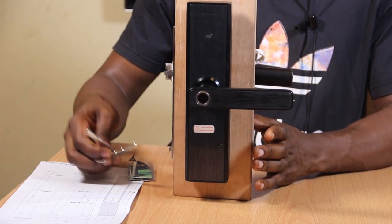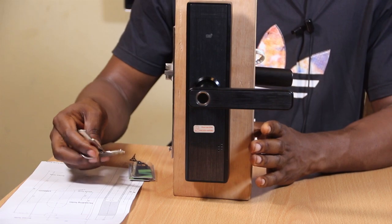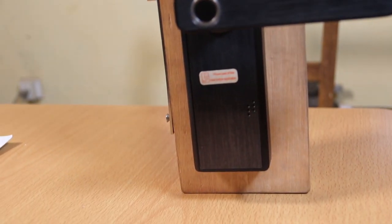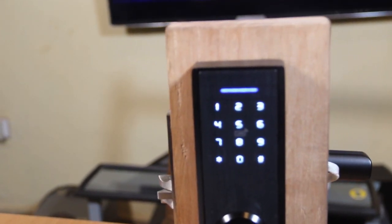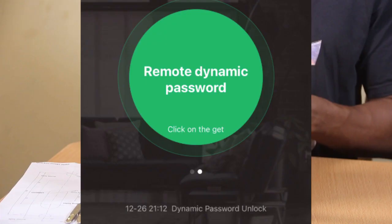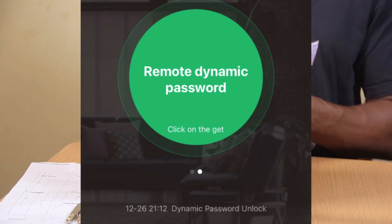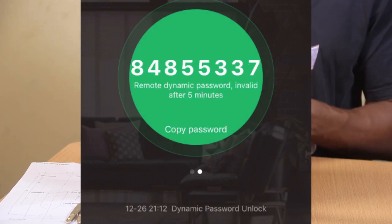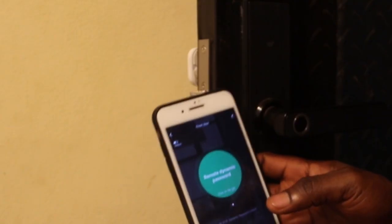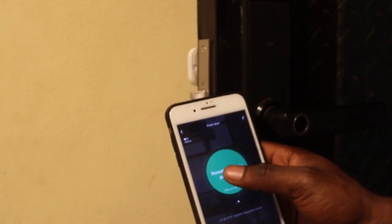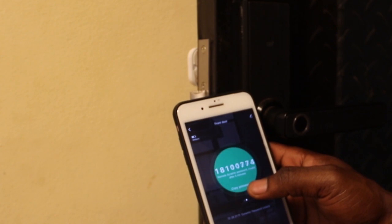There is also a remote function to this door lock. This device you can connect to a WiFi source so you can remotely control it. For example, you can generate a temporary code for your door lock.